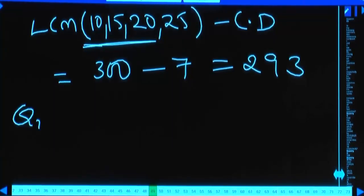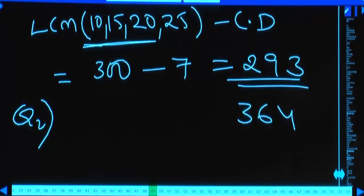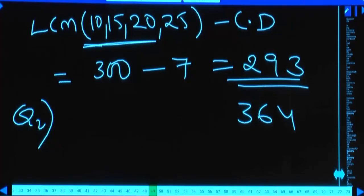So Q1 = 293 and Q2 = 360. Q1 < Q2. Looking at the options, Q1 less than Q2 means only the fifth option can be the answer, so you don't even need to calculate Q3.